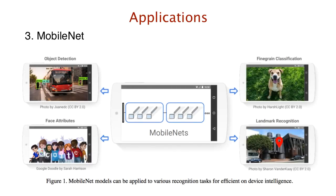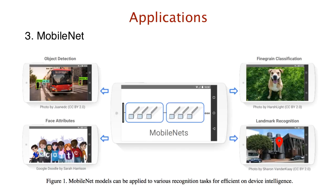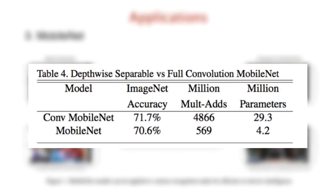Third is MobileNets, a neural network architecture designed to minimize latency in smaller-scale networks so that computer vision applications run well on mobile devices. MobileNets use depthwise separable convolutions in a 28-layer architecture. Compared to fully connected layers, using depthwise separable convolutions drops ImageNet accuracy by only 1% while reducing parameters from 29.3 million to just 4.2 million, with a significant decrease in multiply-add operations as well.